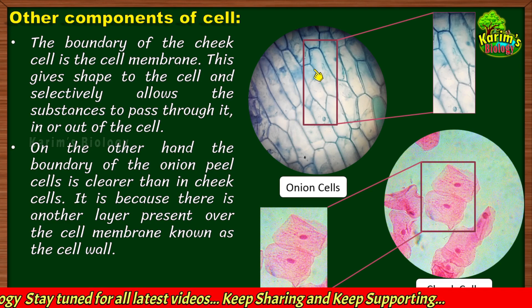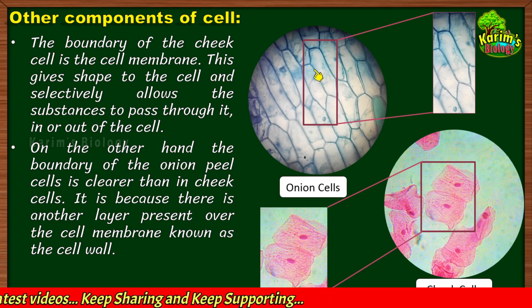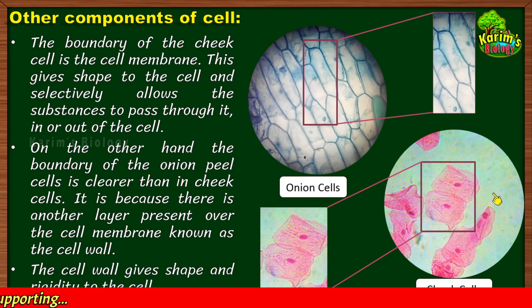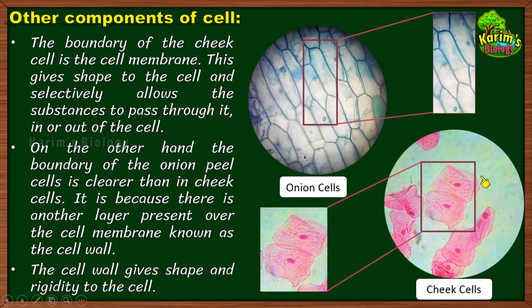What is the use of the cell wall in the plant cell? The cell wall gives shape to the cell. I mentioned that cheek cells are not in a particular shape, whereas onion peel cells are all in a particular shape — it is the cell wall that gives shape to the onion cells. Not only shape, the cell wall also gives rigidity to the cell. Rigidity means toughness — the cell becomes stronger due to the presence of the cell wall.